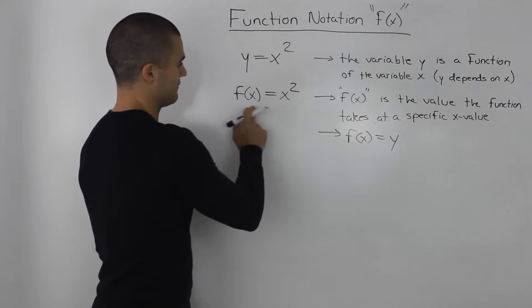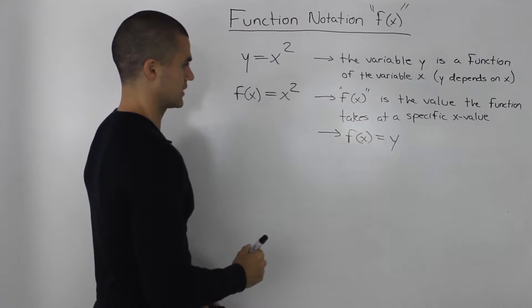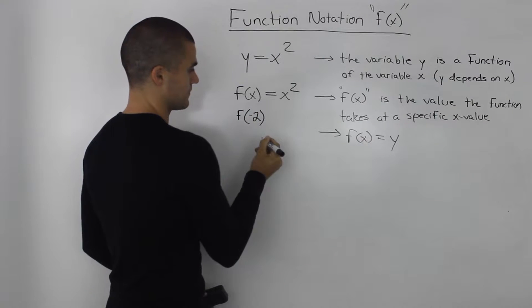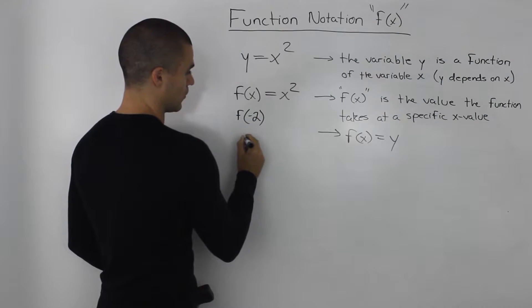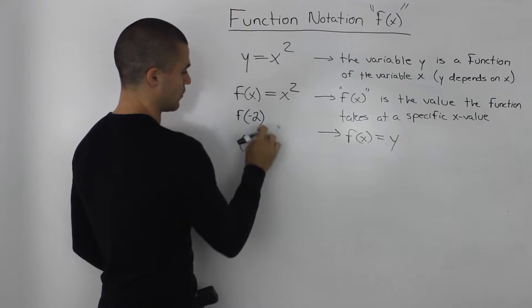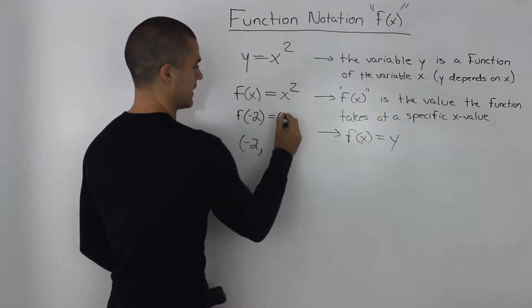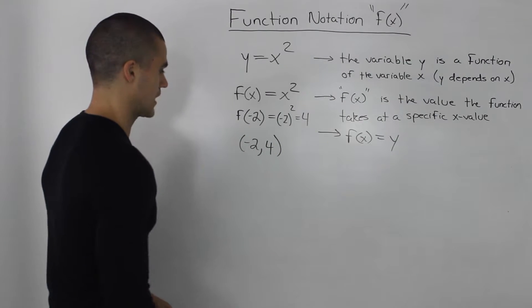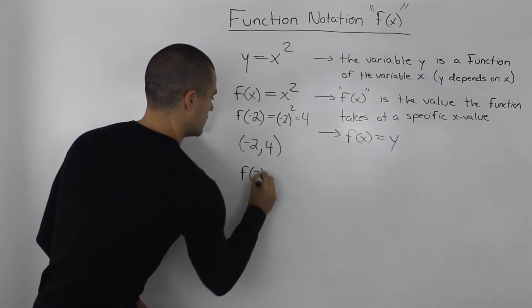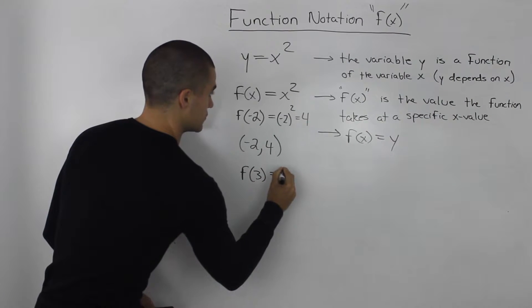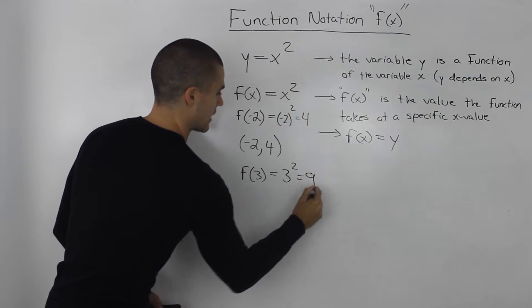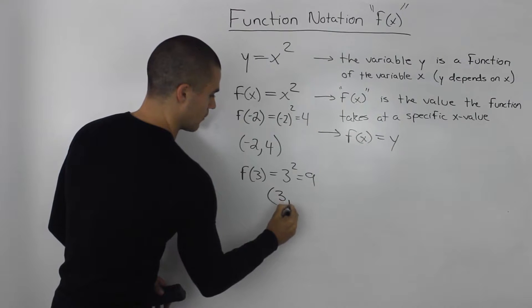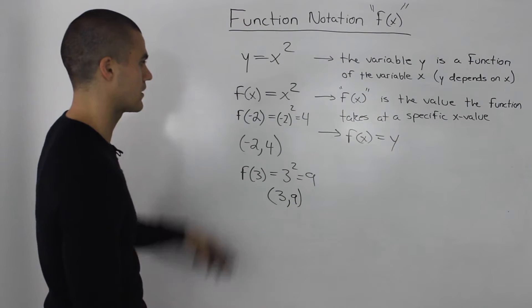So in this example f of x equals x squared, that's the function we're dealing with. So if we wanted to find the value of f of negative 2, basically what they're asking for is what's the y value at an x value of negative 2. So we would just plug in negative 2 for the x value in the function and we would get 4. That's basically what that means. Or f of 3 equals 3 squared which equals 9. So the coordinate on the function would be an x value of 3 and a y value of 9. That's how these relate.